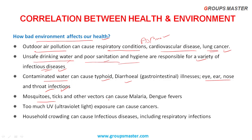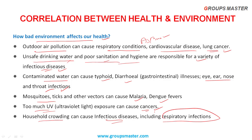Mosquitoes and ticks can spread malaria and dengue fever. Exposure to too much ultraviolet rays can cause skin cancers. Household crowding leads to infectious diseases like respiratory infections - as seen with COVID, in urban areas with compact settlements, infectious diseases spread easily.